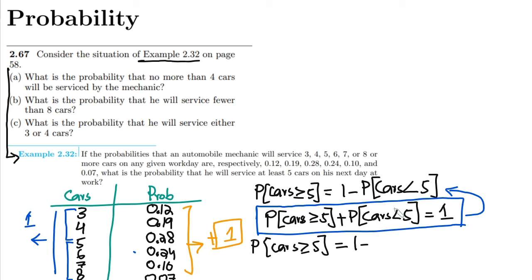These are what, 1 minus probability of the cars less than 5 are which, so these are the probability of the cars equal to 4 plus the probability of the cars equal to 3.